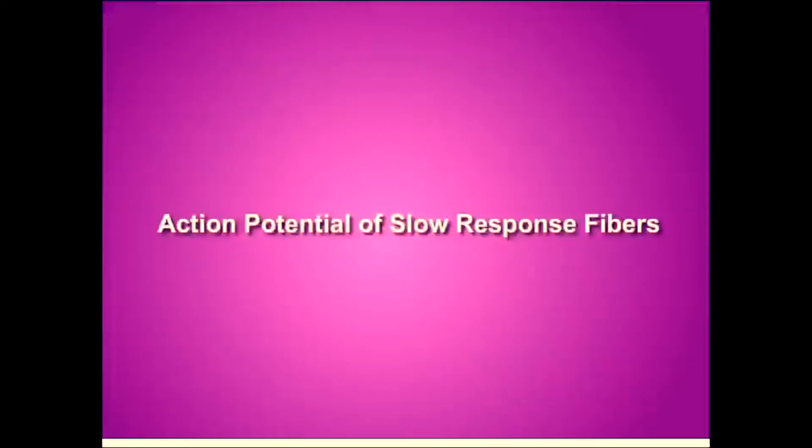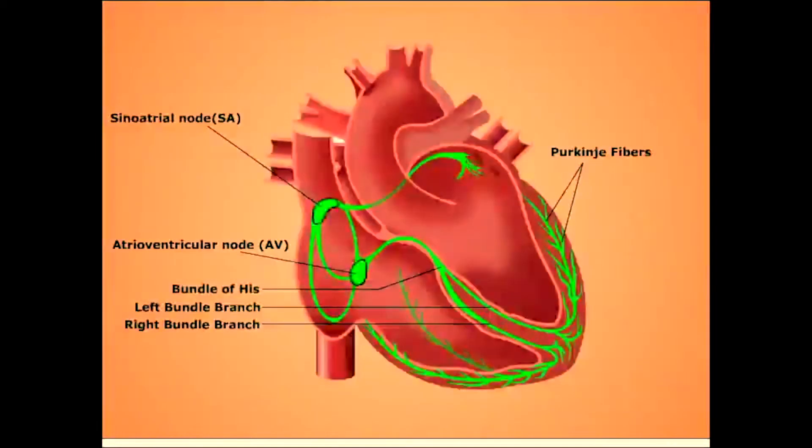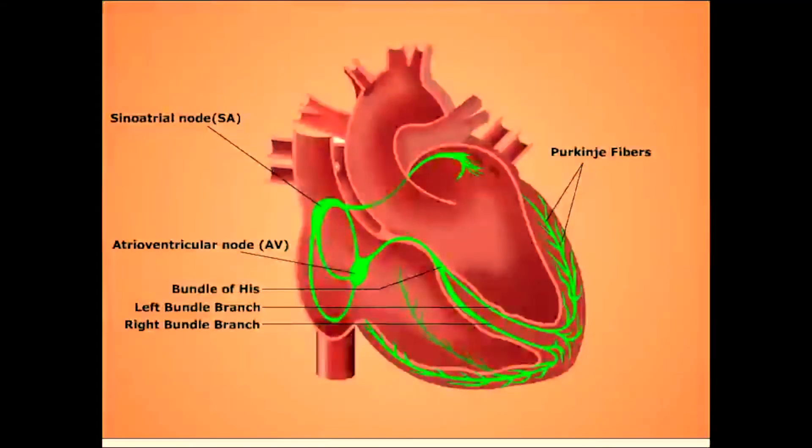The action potential of slow response fibers will now be reviewed. These slow response fibers are found primarily in the sinoatrial and atrioventricular nodal fibers. This graph illustrates the phases of the action potential within the SA node. The SA node is the primary pacemaker within the heart. Since slow response fibers lack functioning fast channels, they depolarize slower, causing a slower conduction of the action potential across the SA nodal fibers.